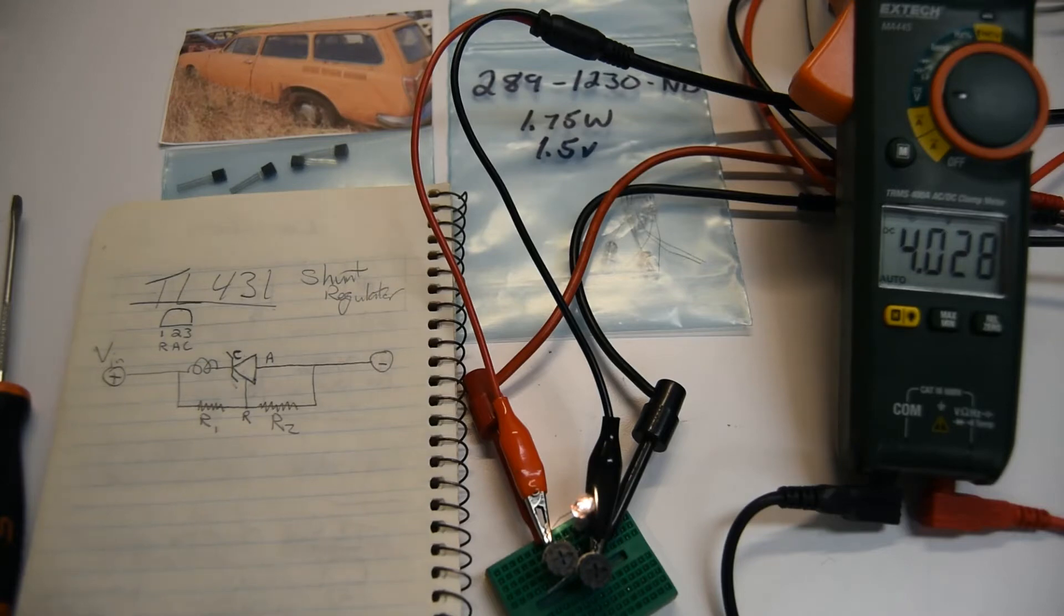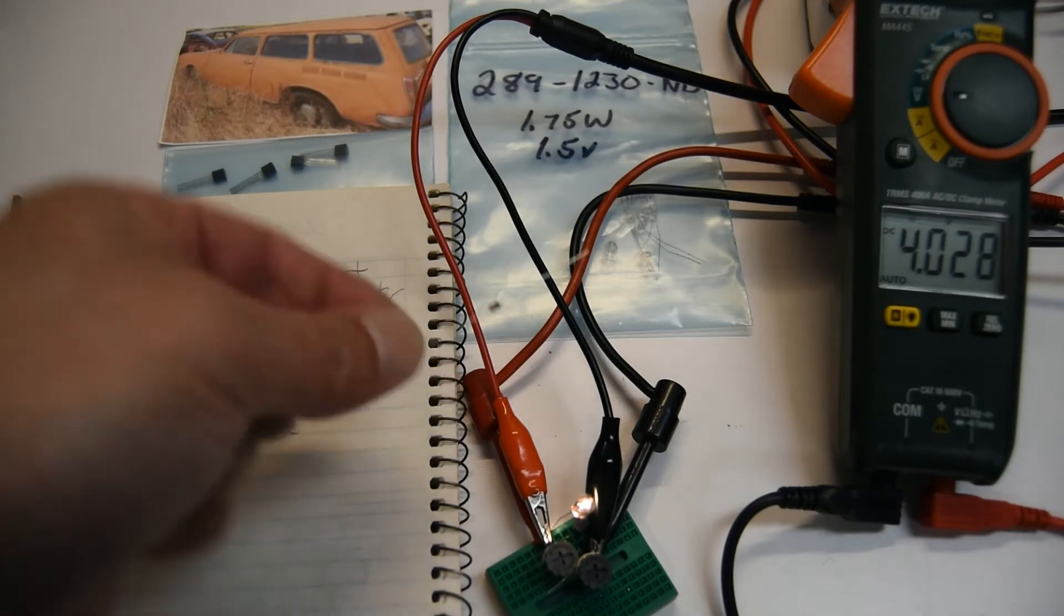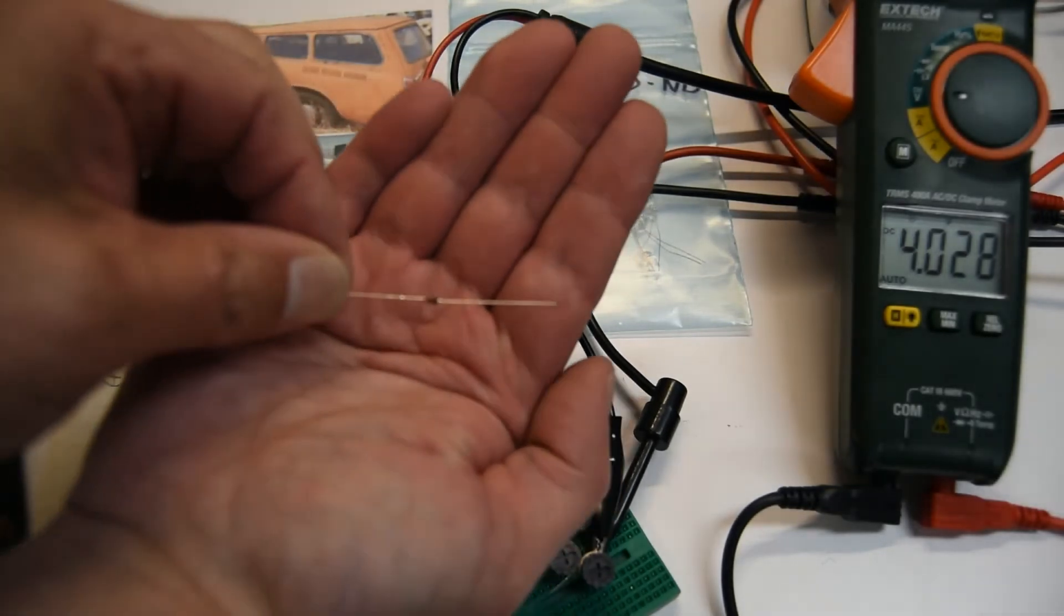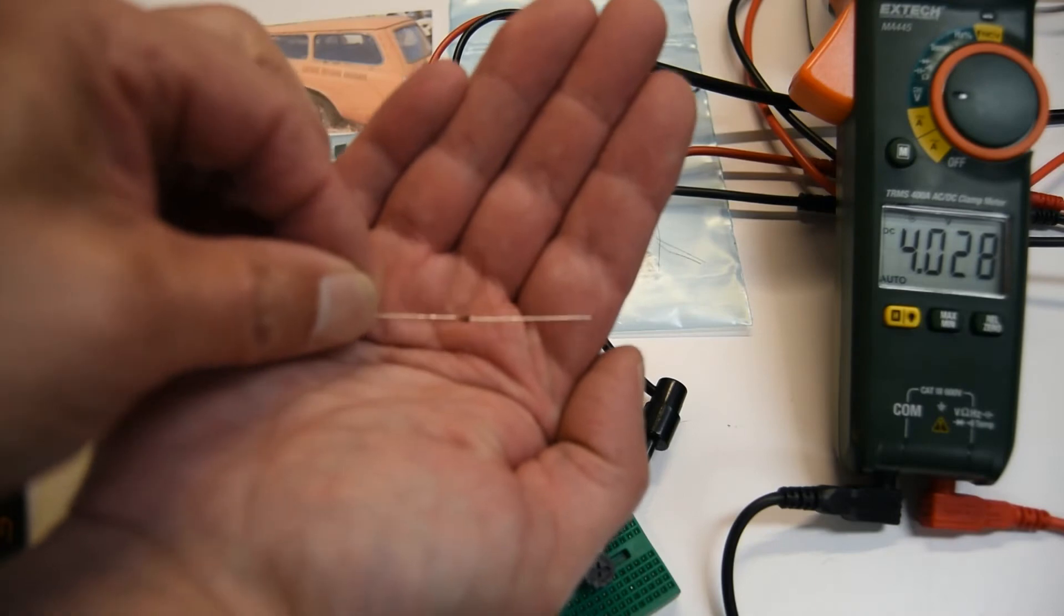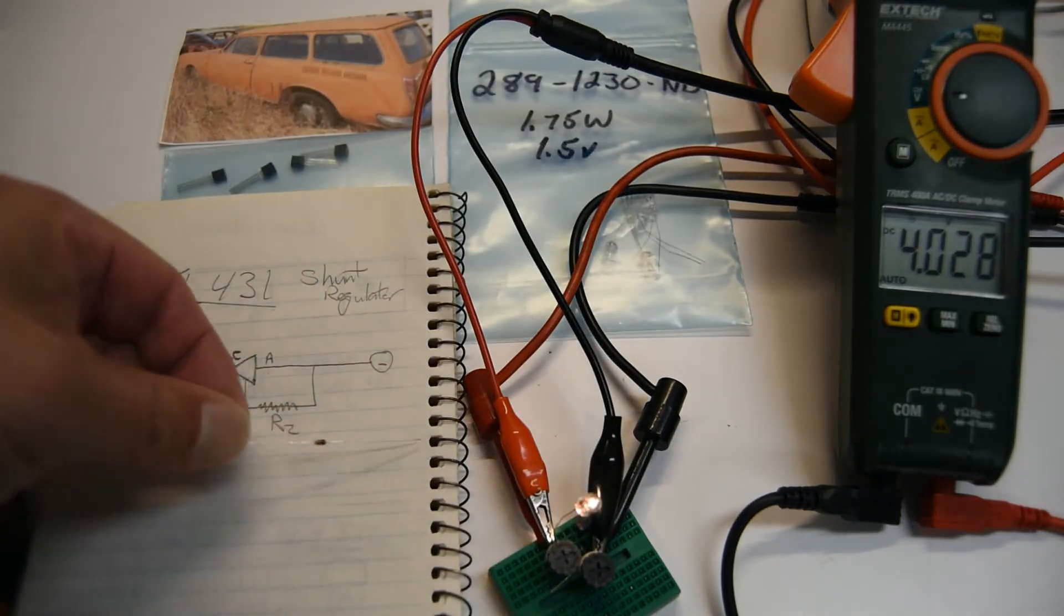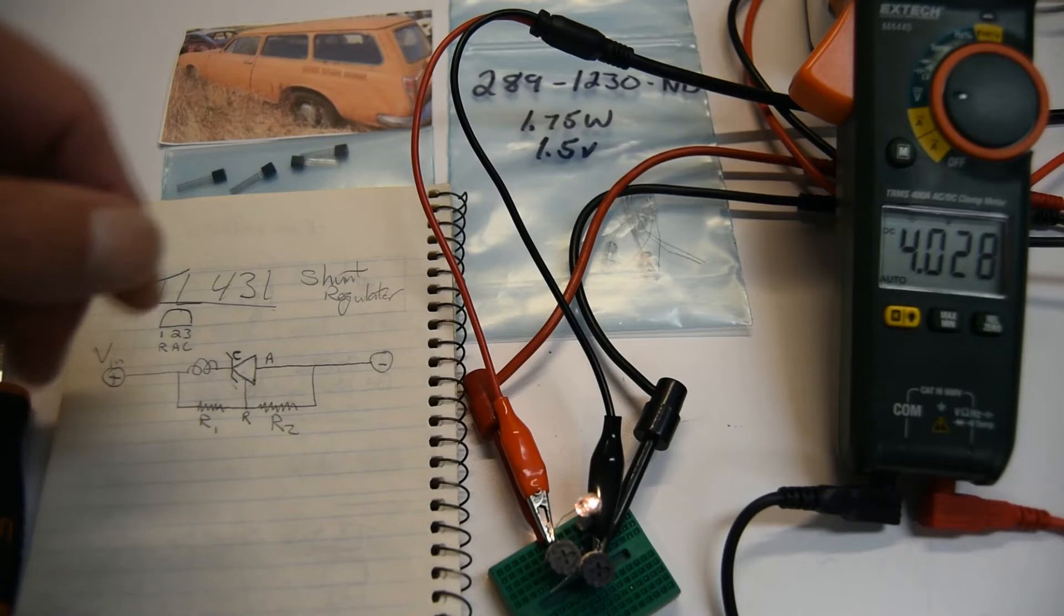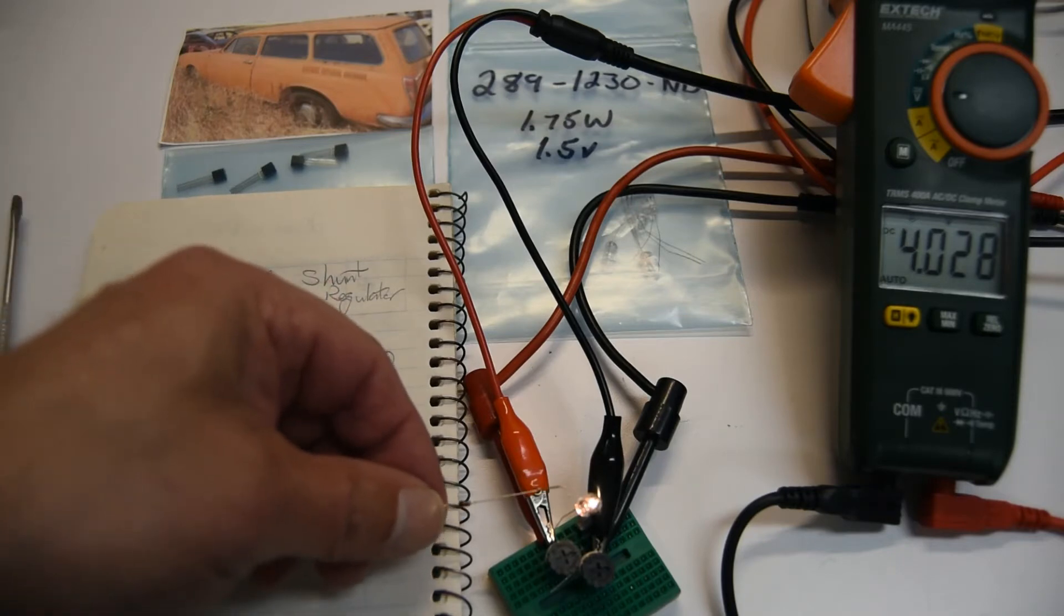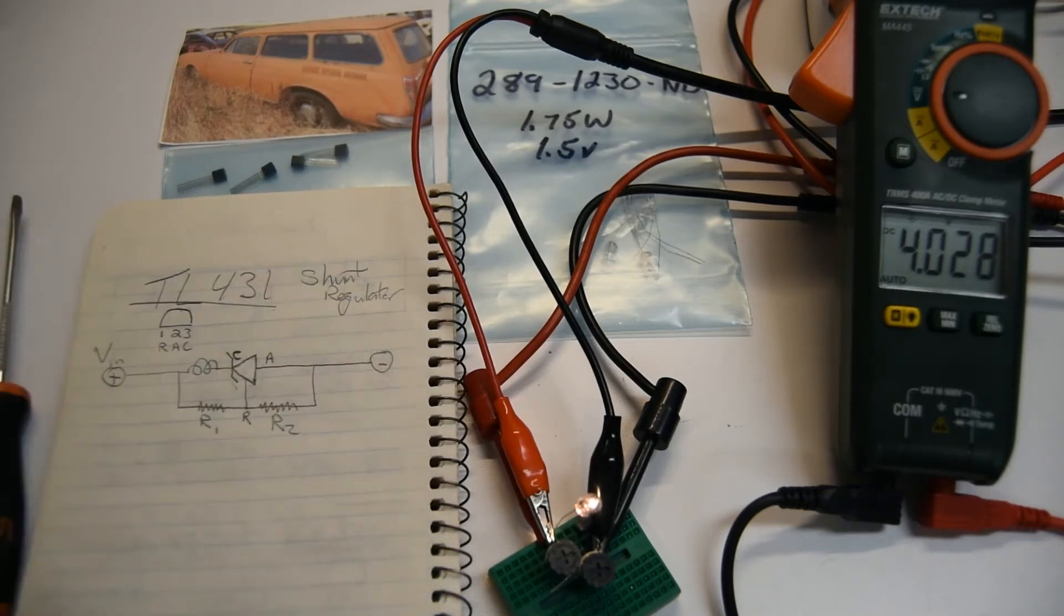The rudeman regulator basically uses a zener diode, one of these little guys, a zener diode and a light bulb such as this to regulate the voltage across battery terminals with a resistor.